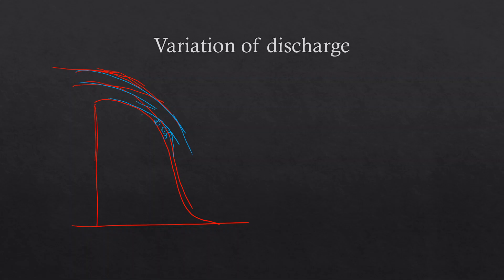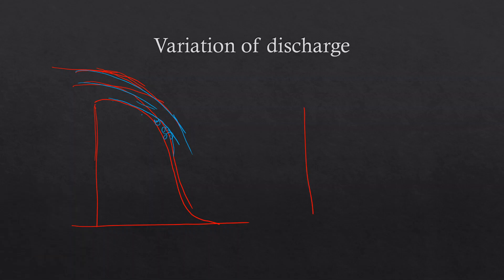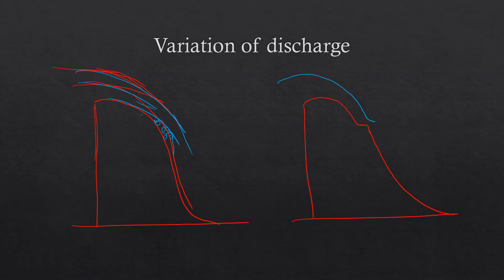Therefore, where there is a chance of developing negative pressure, we provide a step. This diverts the jet away from the spillway so that instead of a very small gap forming, a large gap opens, allowing air to enter. That way it doesn't become negative pressure — it simply remains at atmospheric pressure.